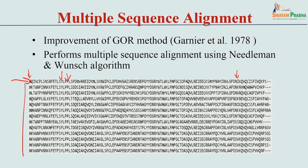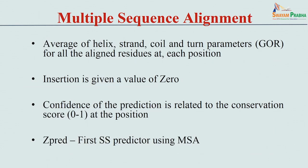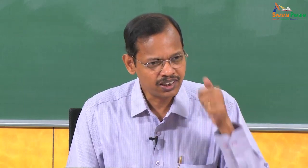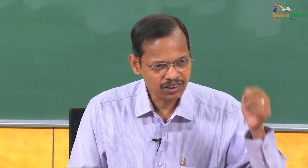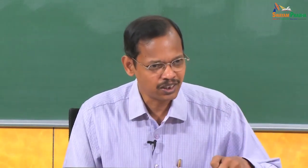If a position is highly conserved, the possibility of high prediction performance is greater because we get the same information from different sequences. When building a sequence alignment, there are different ways to proceed. First, we can get the GOR values - that means we have frequency of occurrence matrices. We get the frequency of occurrence for helix, strand, and coil for different residues in the sequence alignment.